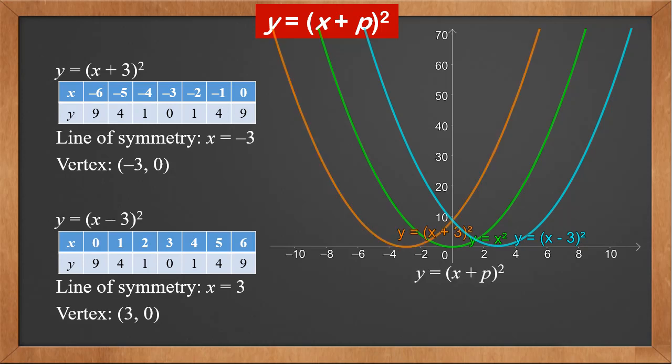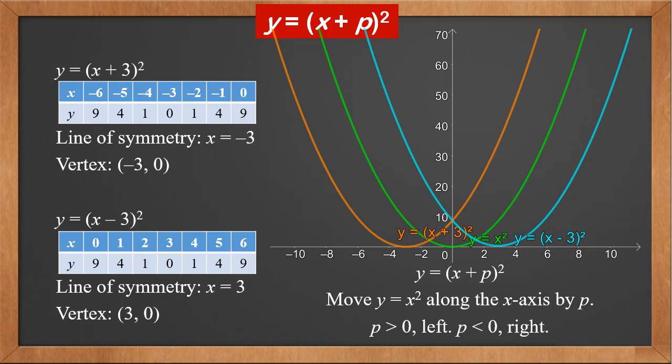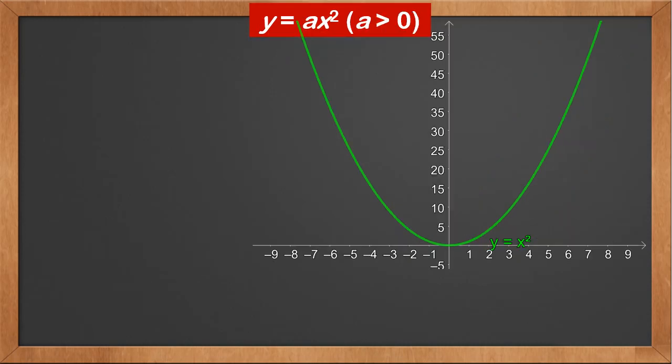So for y equals (x plus p) squared, it is y equals x squared moved along the x axis by p units. If p is positive, it's moved to the left. If p is negative, it's moved to the right.